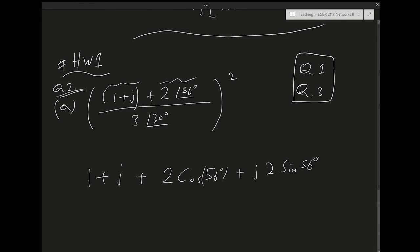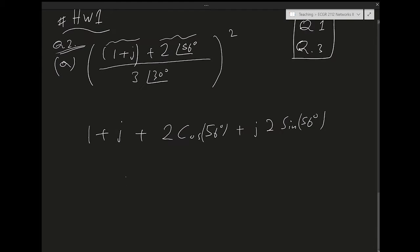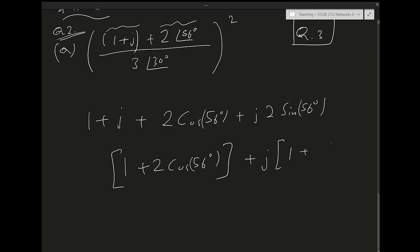The sum is going to be: real part = 1 + 2cos(56°), and imaginary part = 1 + 2sin(56°). Now I want to go to my calculator — in this case I'm using Mathematica — to evaluate this.